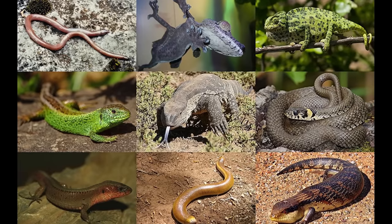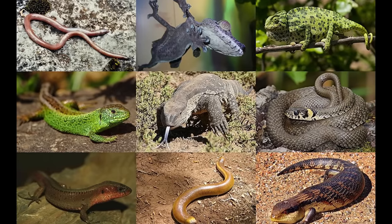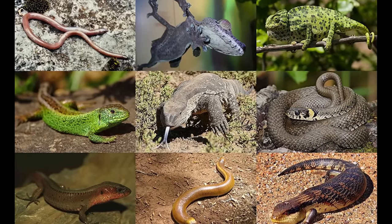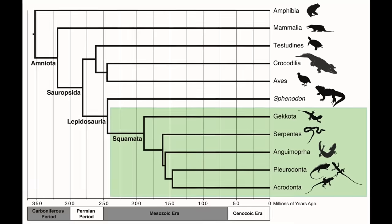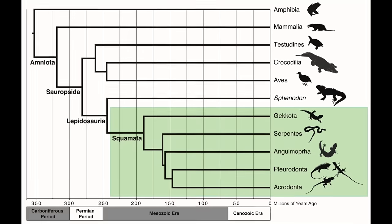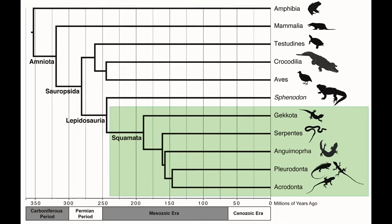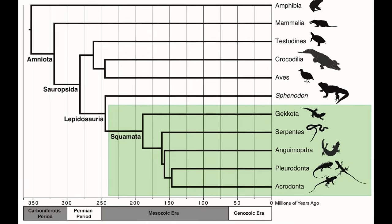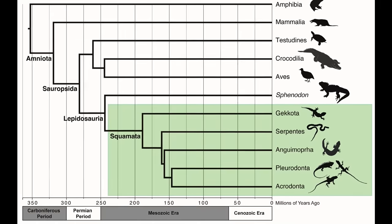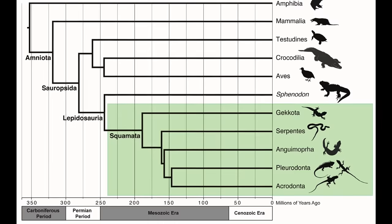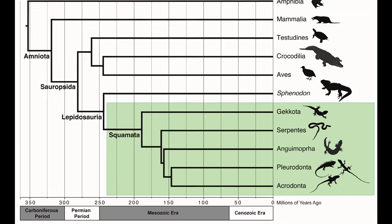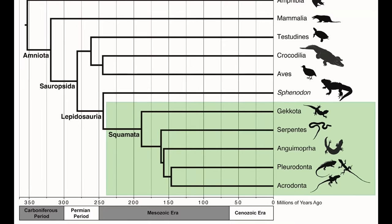With their Rhynchocephalian cousins being far more numerous and diverse. However, by the early Cretaceous, this group declined quite sharply for reasons that are not well understood, with the Squamates moving into their vacated niches.